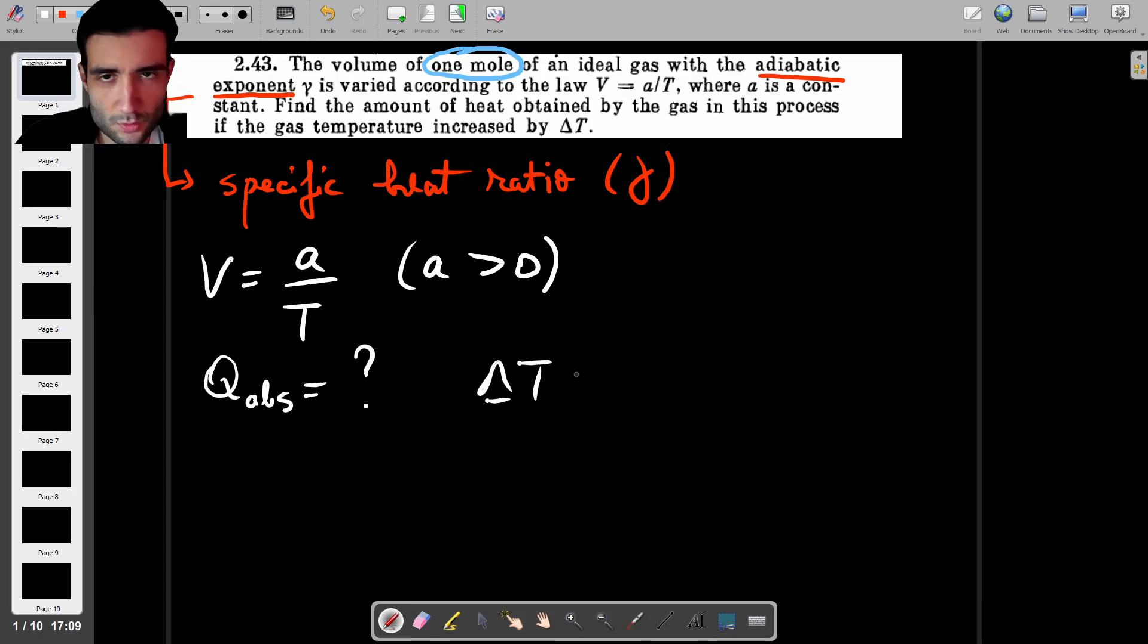So we're going to pretend here for a second that we know this value delta T which we don't have a number for, but we assume it is given.